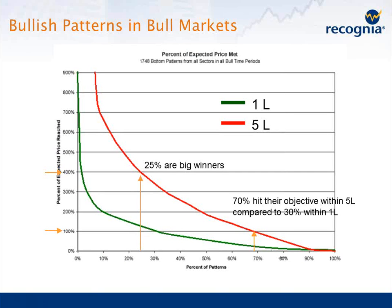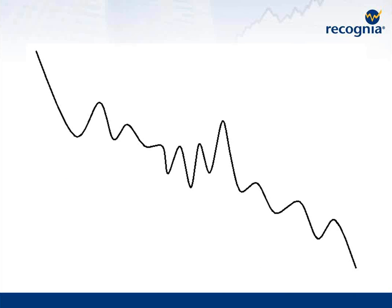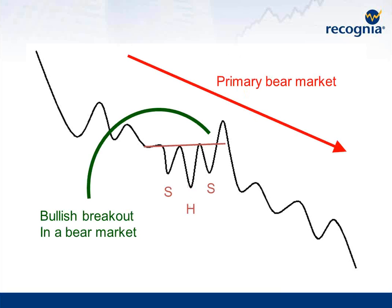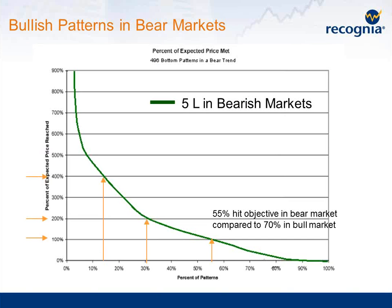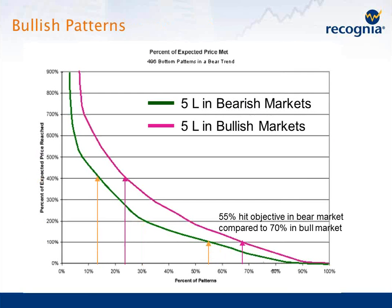Some of you might say, this is bull patterns in bull markets, so we kind of expect those to do well. So what if we look at bullish patterns in bearish markets? When Martin looked at these kinds of events, he found they don't work quite as well, but that 55% were hitting their objective within 5L, compared to 70% in bull markets. About 30% hit twice their objective, and about 15% hit four times the objective. So bullish patterns in bear markets still did quite well. He also looked at the effect of bearish patterns in both bull and bear markets — the results were similar.